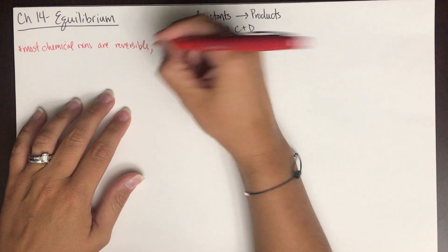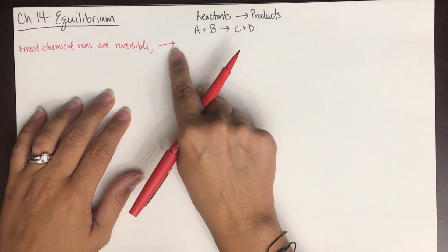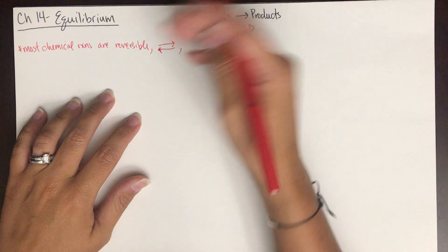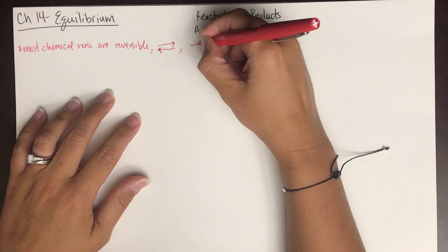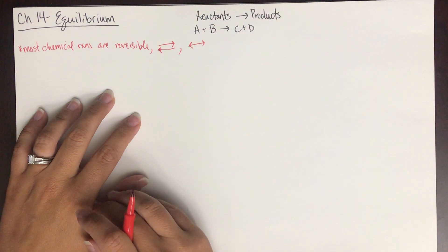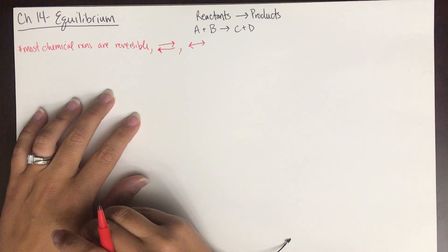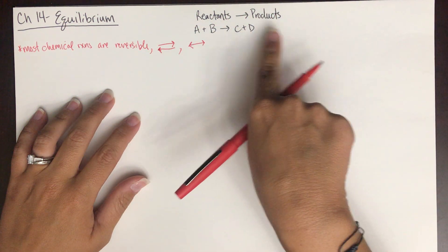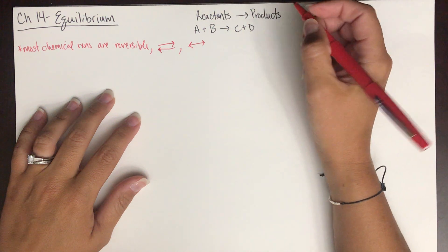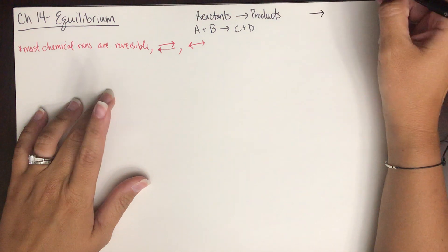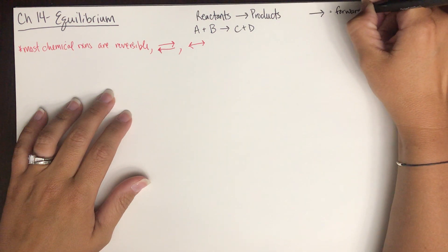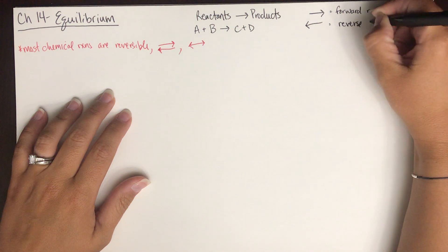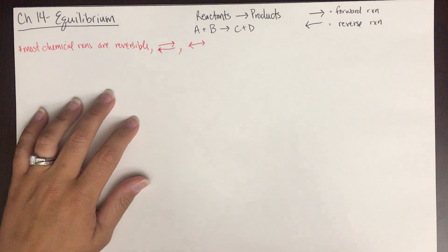What reversible means is that the reaction is happening in what we call the forward direction, and it is also happening in the reverse direction. So in this chapter, any time we're talking about equilibrium, you're going to see a double-sided arrow instead of a single-sided arrow. This double-sided arrow means that the reaction is reversible. An arrow pointing to the right-hand side is called the forward reaction, and an arrow pointing to the left-hand side is called the reverse reaction.